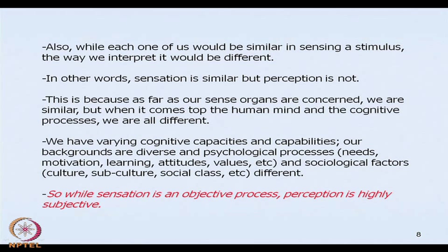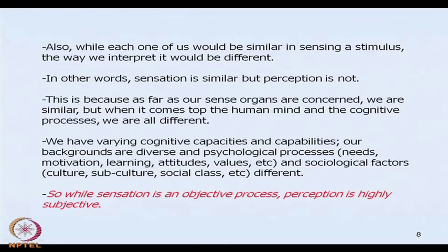Because of such differences, our perceptions are also going to get impacted. While our sense organs are the same and we may have the same sensation, the manner in which we will interpret the stimuli will be very different — because of our cognitive capacities and capabilities, because of psychological influences, and because of sociological factors. While sensation is an objective process, perception is something which is highly subjective. It will vary from person to person — people will think differently and interpret things very differently.